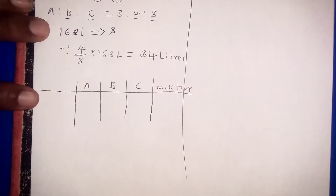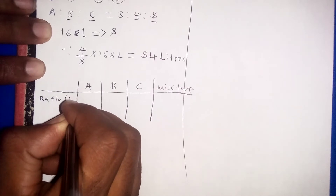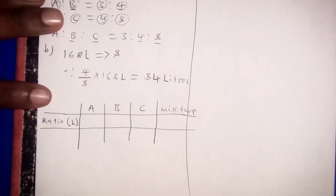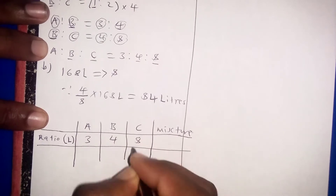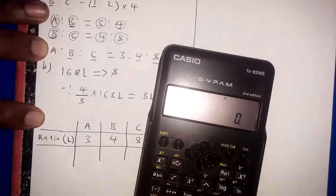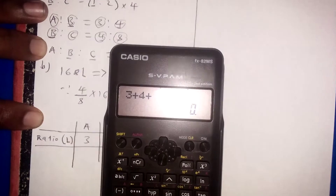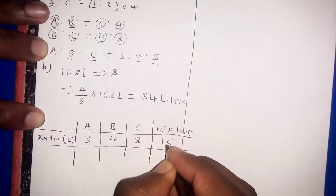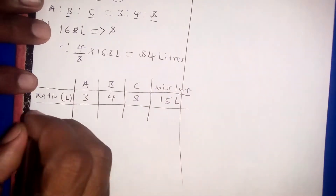The ratios in liters are: A is 3, B is 4, and C is 8. The total ratio of the mixture is found by adding: 3 plus 4 plus 8 equals 15. So the total ratio of the mixture is 15 liters.